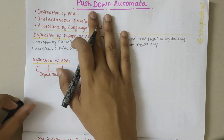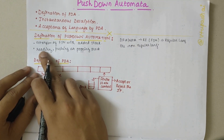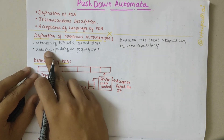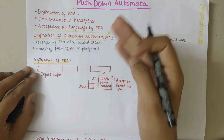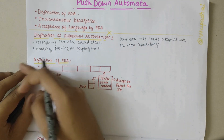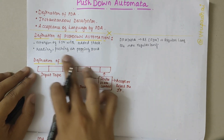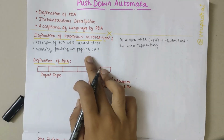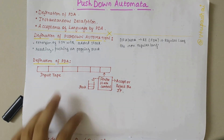The PDA can remember an infinite amount of information. As you keep on pushing and popping, an infinite amount of information could be stored in the PDA.